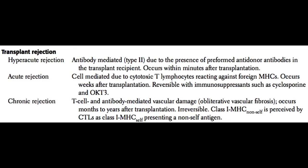Histologically, what's going on in acute rejection is vasculitis of the graft vessels with a very dense interstitial lymphocytic infiltrate. This is primarily carried out by cytotoxic CD8 T lymphocytes.